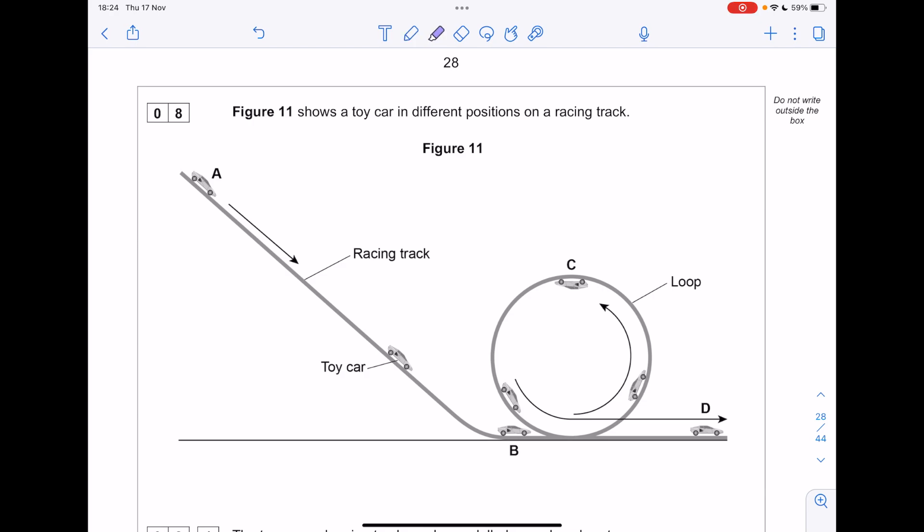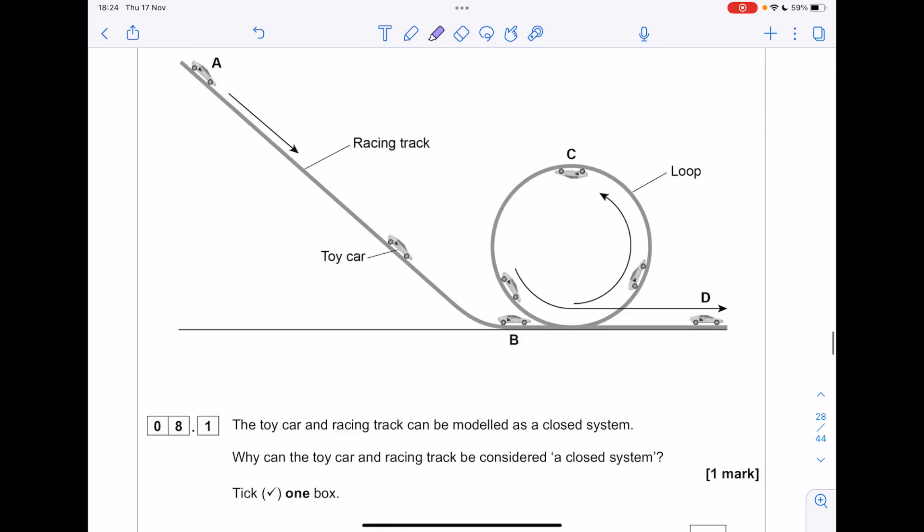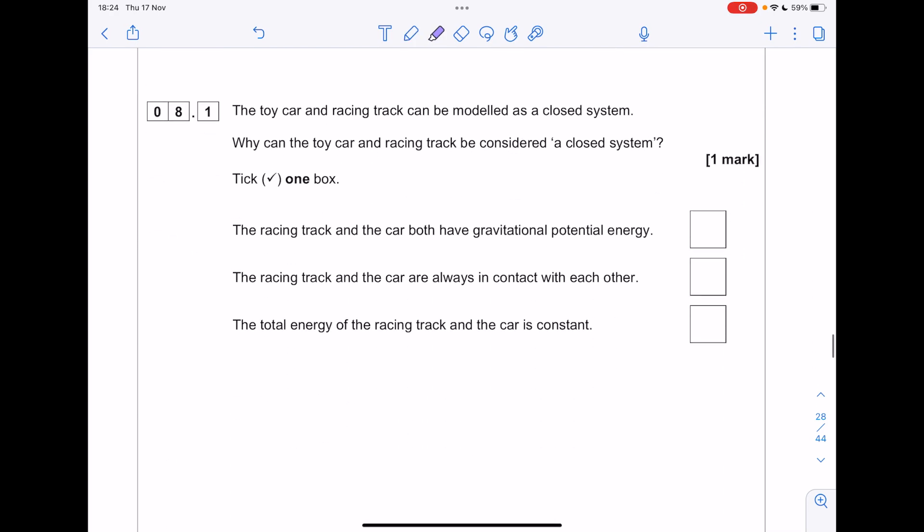Figure 11 shows the toy car in different positions on a racing track. The toy car on the racing track can be modeled as a closed system. Why can the toy car and racing track be considered a closed system? Well, that's because the total energy of the racing track and the car is constant.